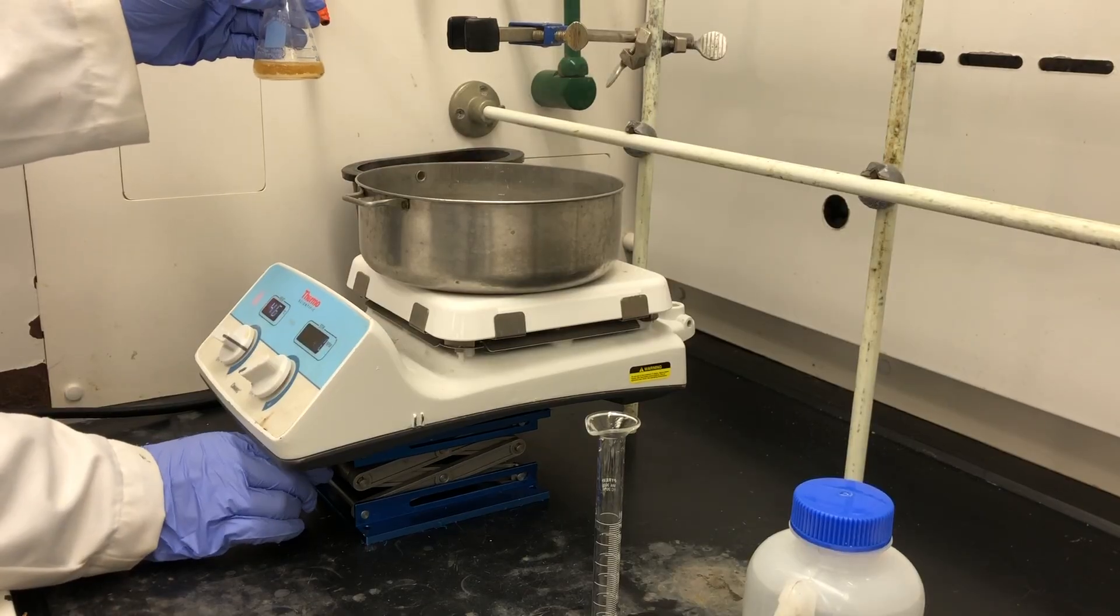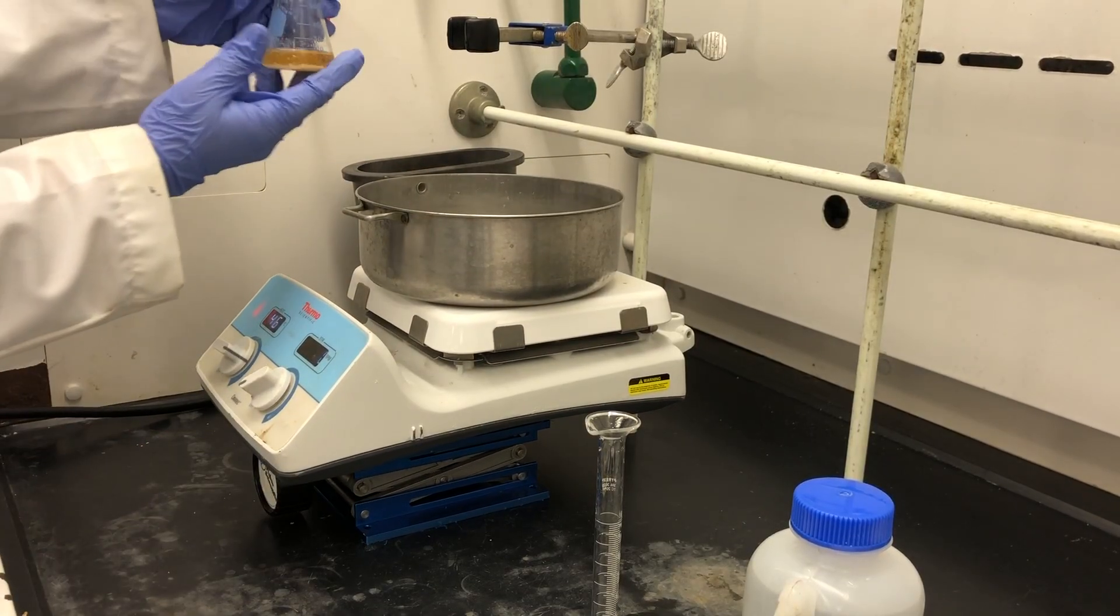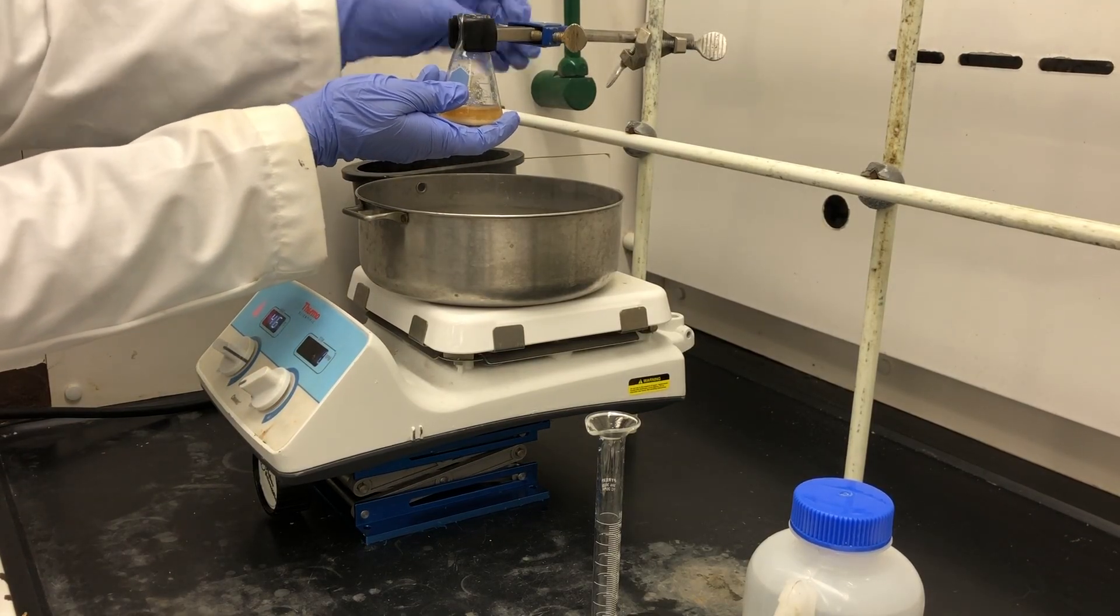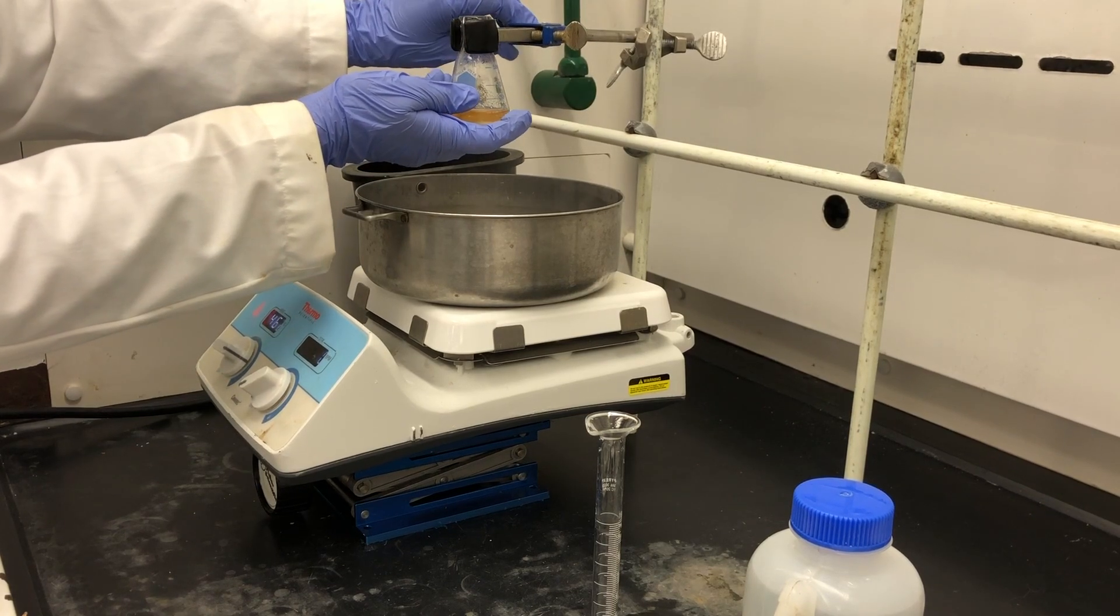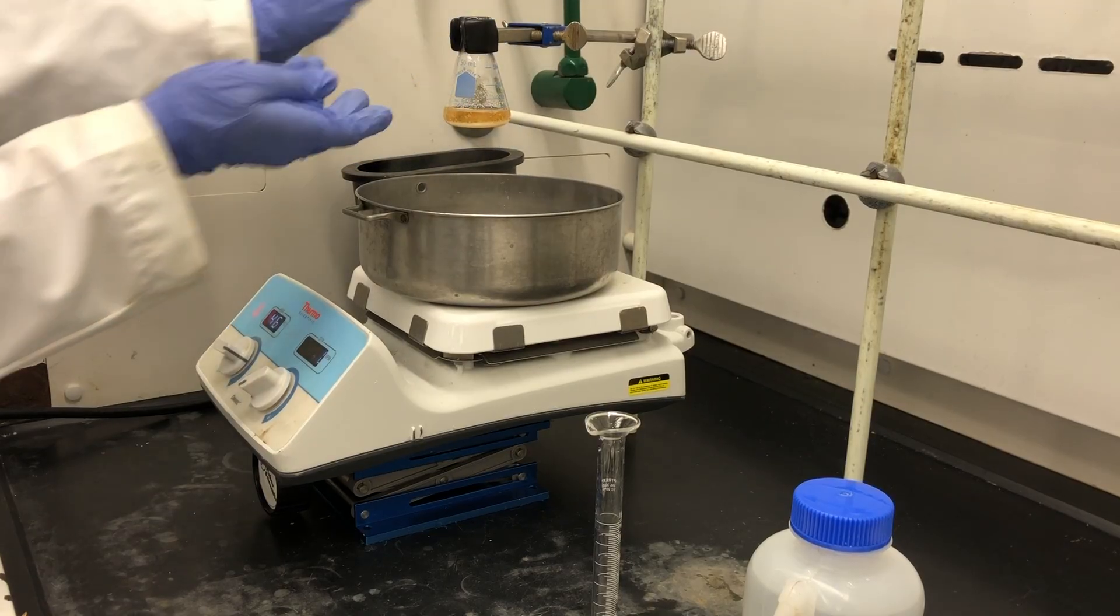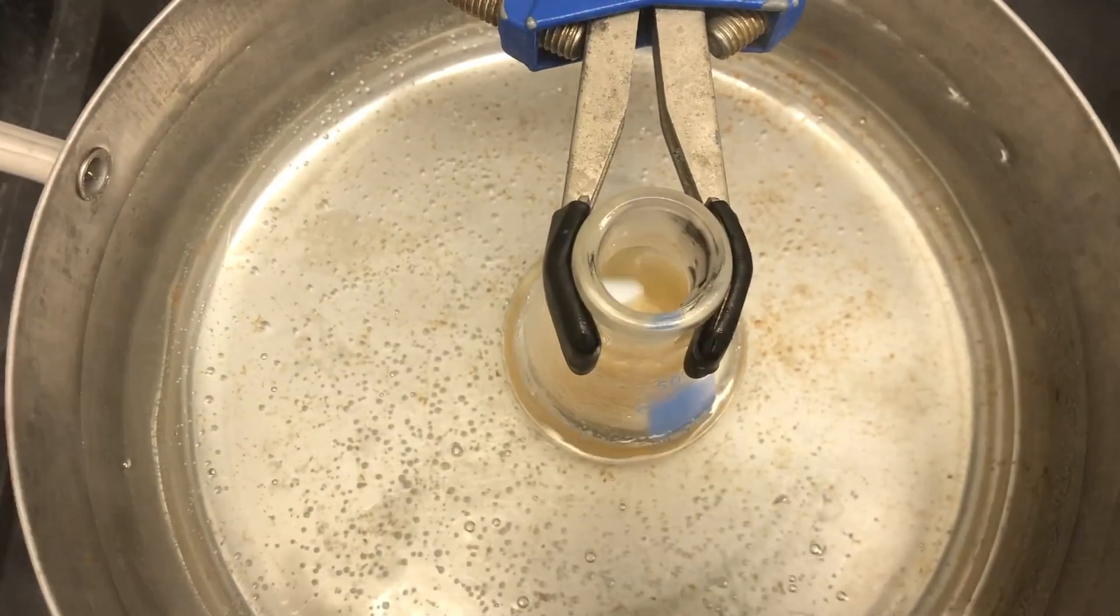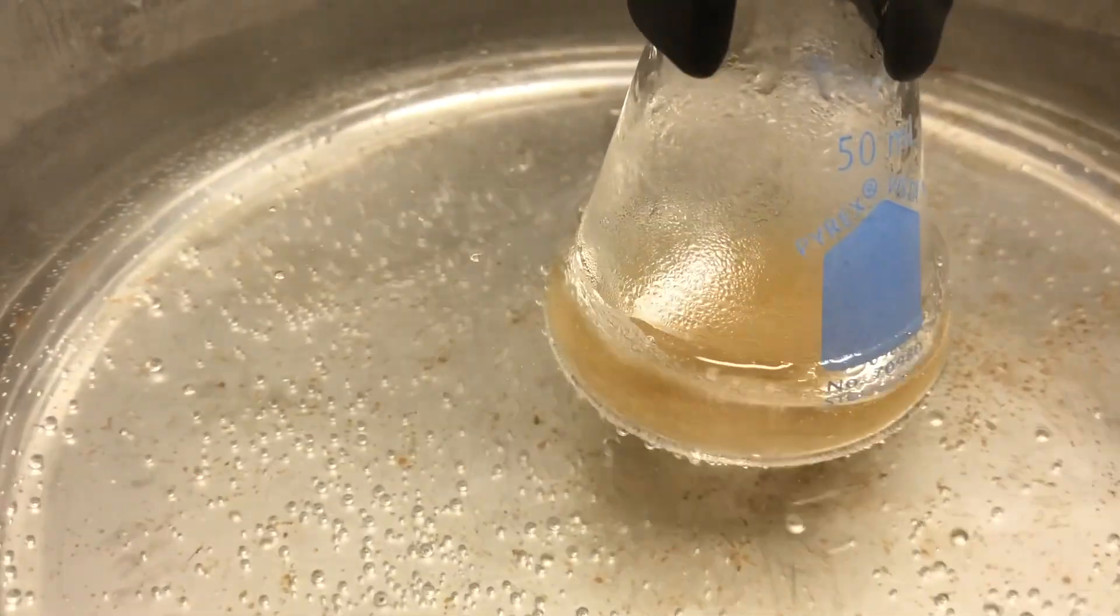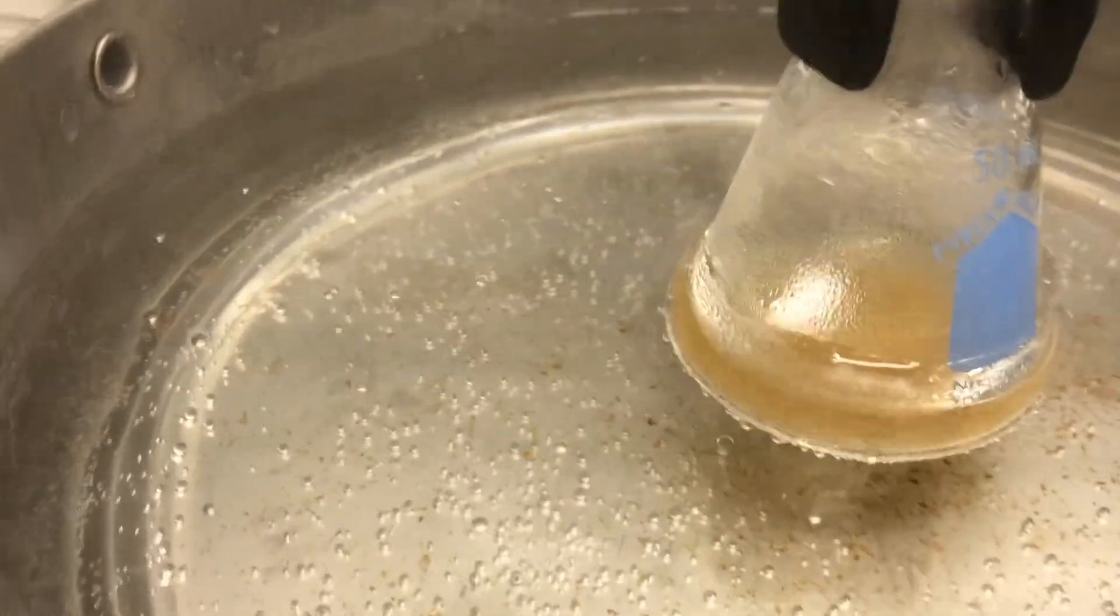That clamp is going to hold it right at the neck of the flask, and then you lift the jack back up. Notice the color of the reaction mixture.